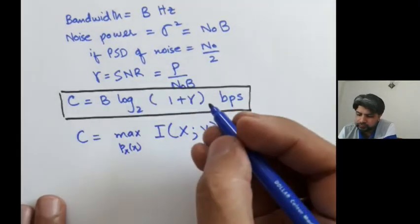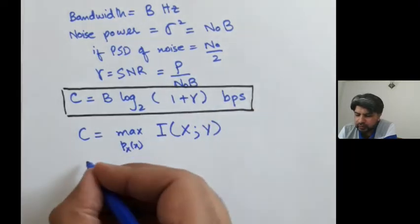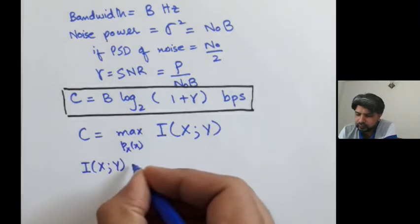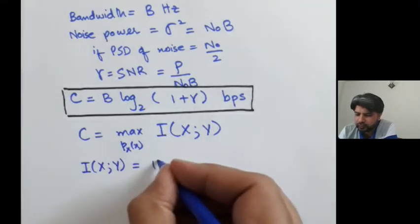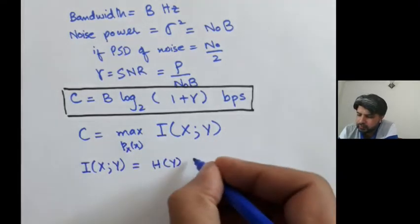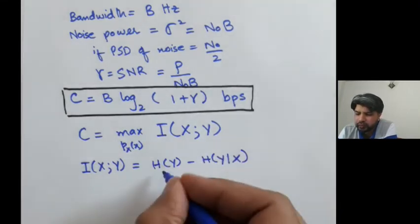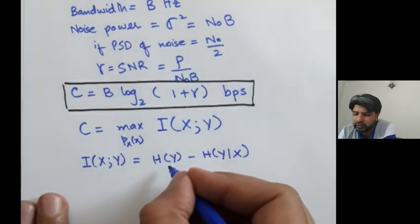Was defined to be equals H of Y minus H of Y given X, where H of Y is entropy or information in the random variable Y.